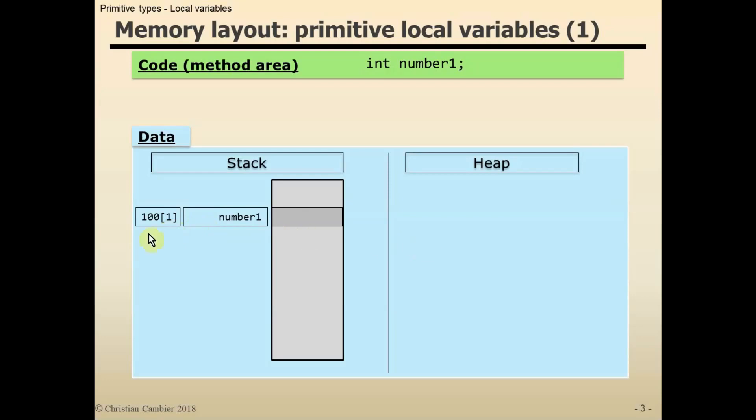100 is a fictional number - I could have used another number. Every variable is located at some unique address in memory. You can compare it with a house in a street. Every house is located at some unique address, and that address is represented by a number.